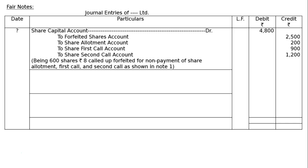Mr. B: 200 × 3 = Rs.600. Mr. C held 300 shares and paid Rs.6 per share — 300 × 6 = Rs.1,800. So total collected: A Rs.100 + B Rs.600 + C Rs.1,800 = Rs.2,500. To forfeited shares account Rs.2,500.